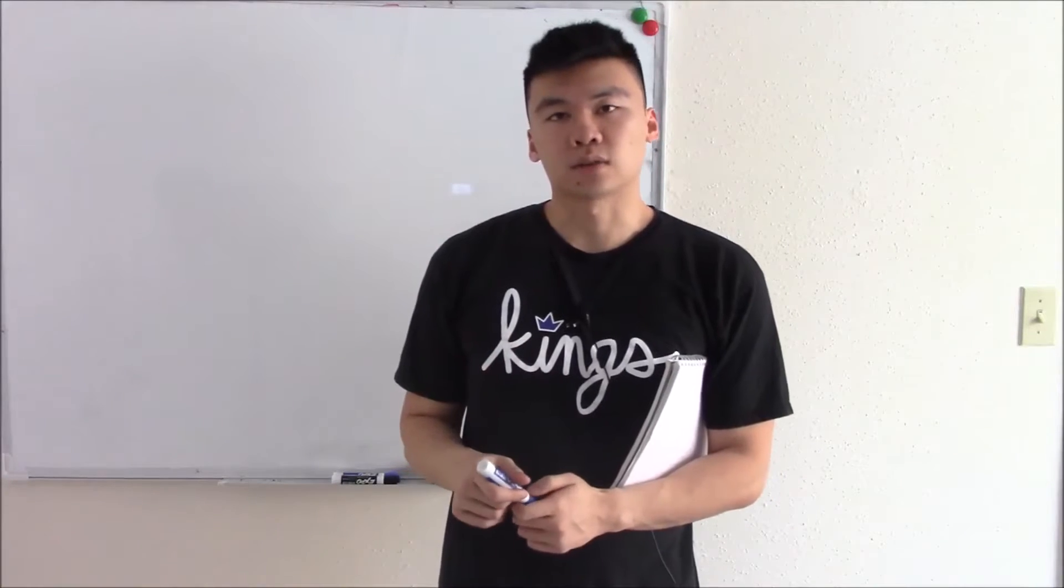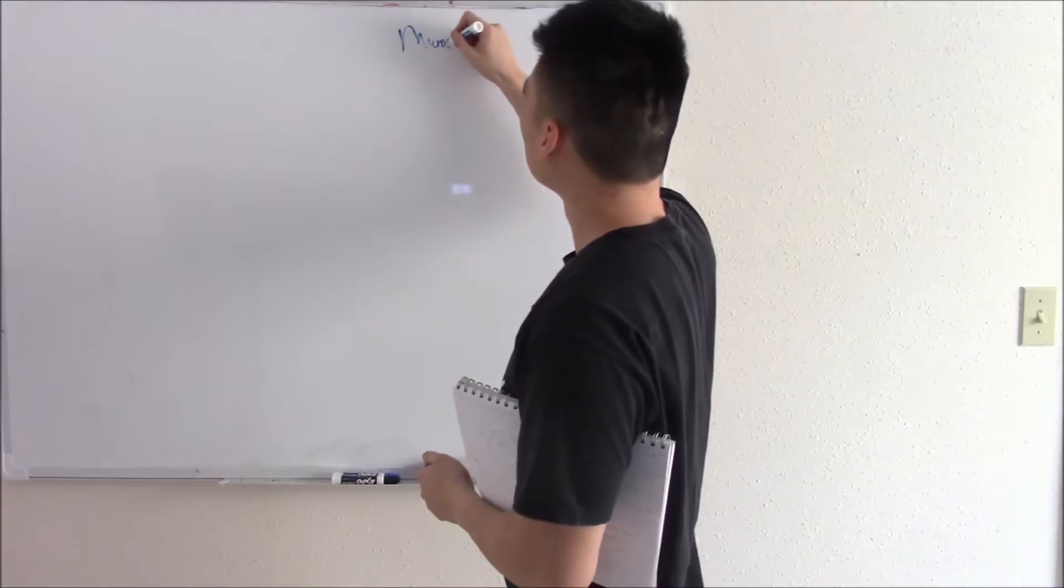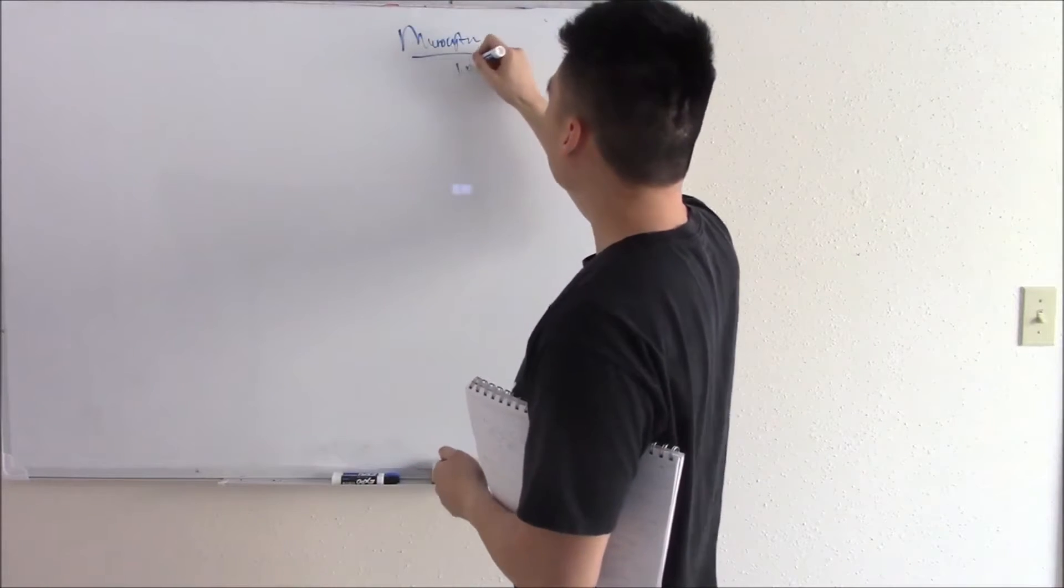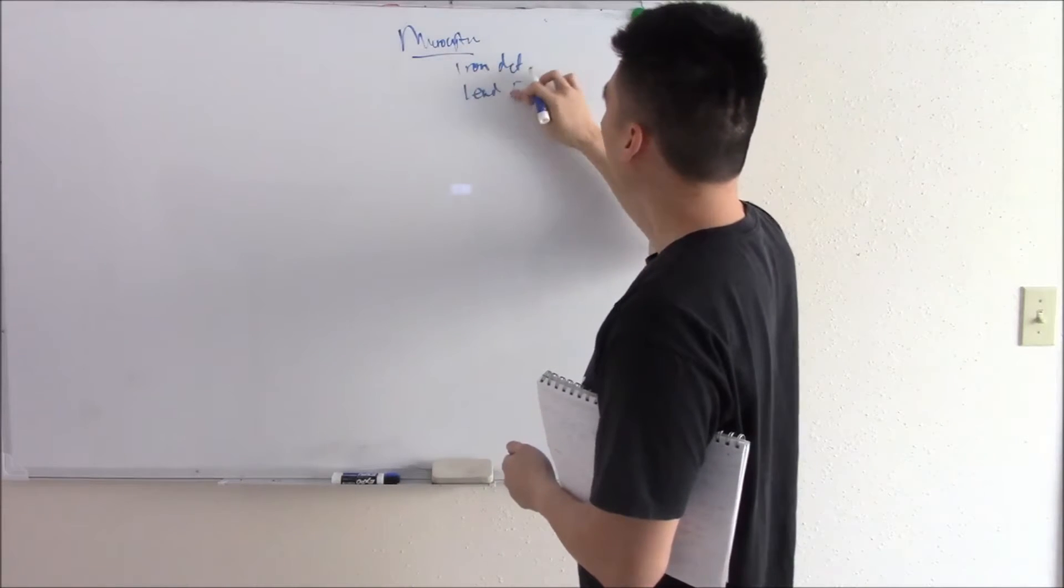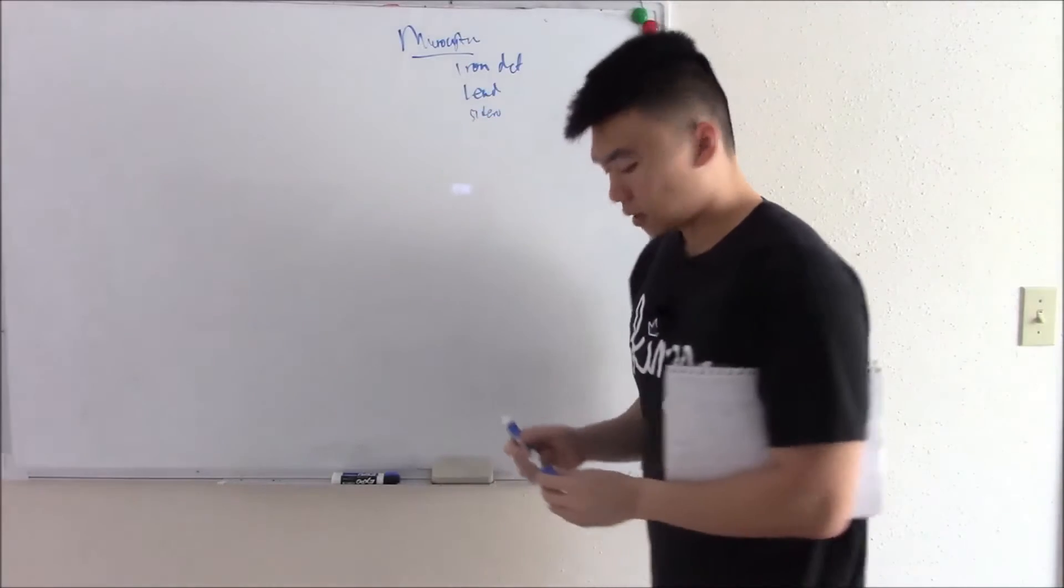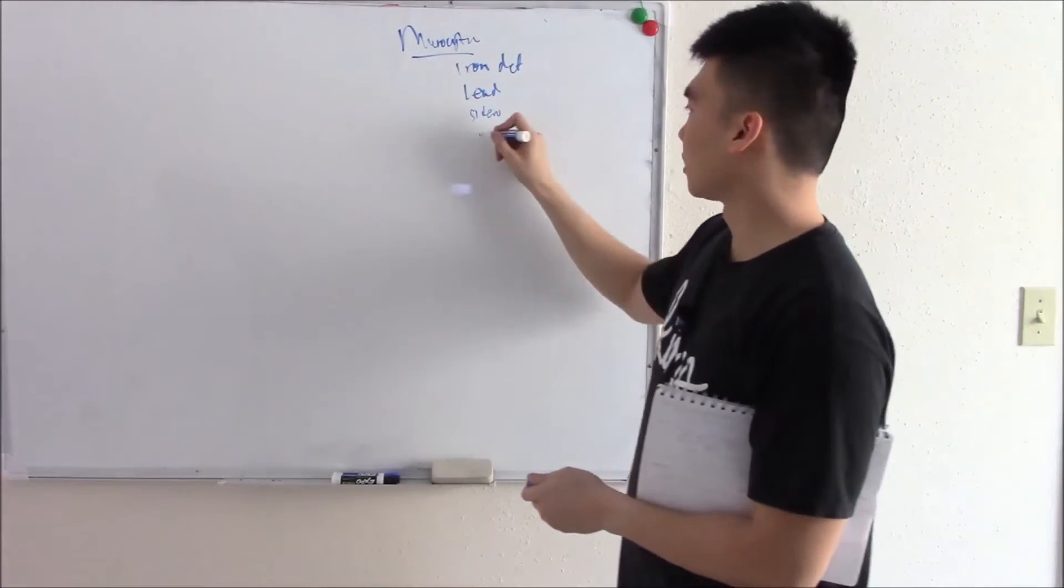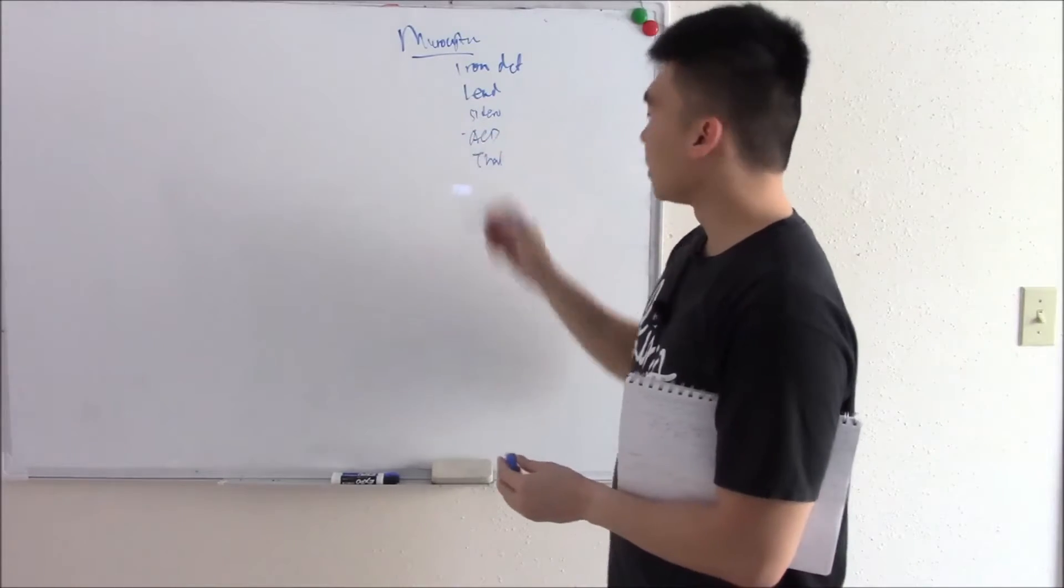In this video we're going to finish up our talk on microcytic anemias. The microcytic anemias we talked about were things like iron deficiency, lead, sideroblastic anemia. The last two that we're going to add on the list are anemia of chronic disease and thalassemias. I'll start with anemia of chronic disease first.